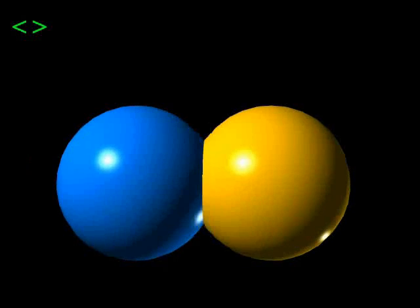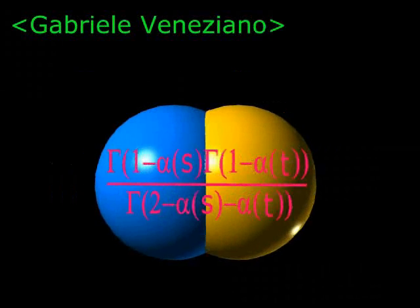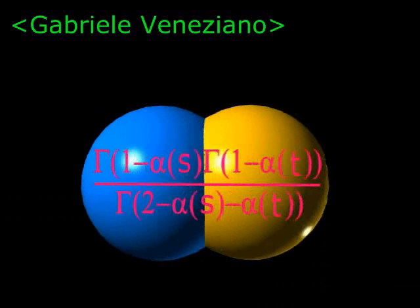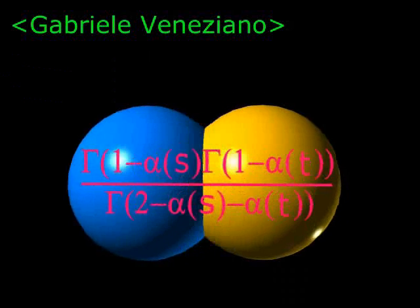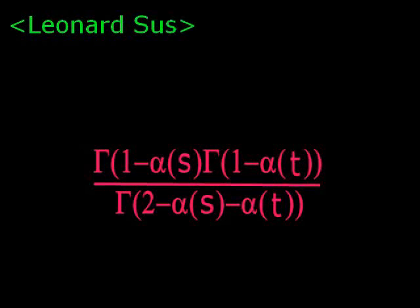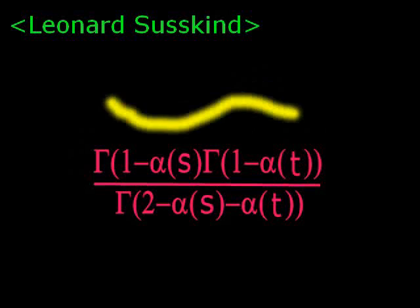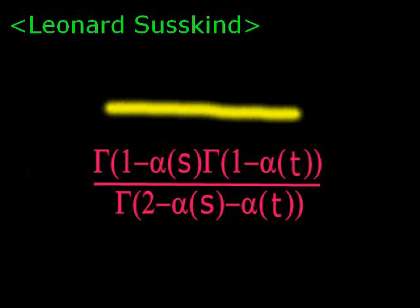However, in 1968, a young physicist called Gabriel Veneziano came up with a formula describing the strong force binding protons to neutrons in the atomic nucleus. Passed from colleague to colleague, the formula ended up in the hands of another young physicist called Leonard Susskind, who found that behind the explanation of the strong nuclear force, the formula actually seemed to describe a small vibrating string.